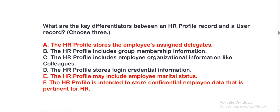Next question: What are the key differentiators between an HR profile record and a user record? Choose three options. Option A, the HR profile stores the employee's assigned delegates. Option B, the HR profile includes group membership information. Option C, the HR profile includes employee organizational information like colleagues. Option D, the HR profile stores login credentials information. Option E, the HR profile may include employee marital status. Option F, the HR profile is intended to store confidential employee data that is pertinent for HR. The correct options are option A, E, and F.